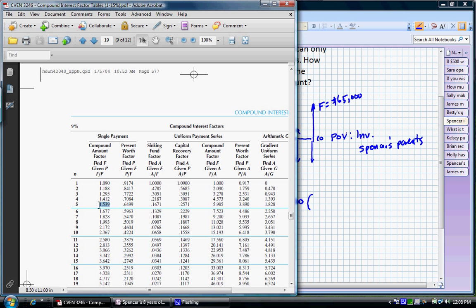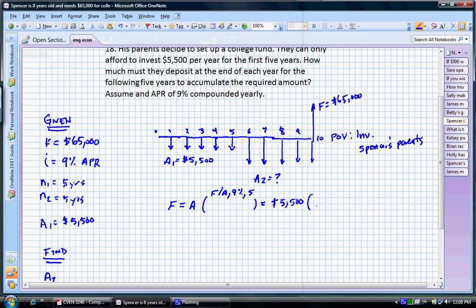Now is that right? No. We're looking for the F slash A factor. F slash A factor at five years and 9%. That's 5.985. I almost got mixed up there. So, we're going to use the 5.985 here.